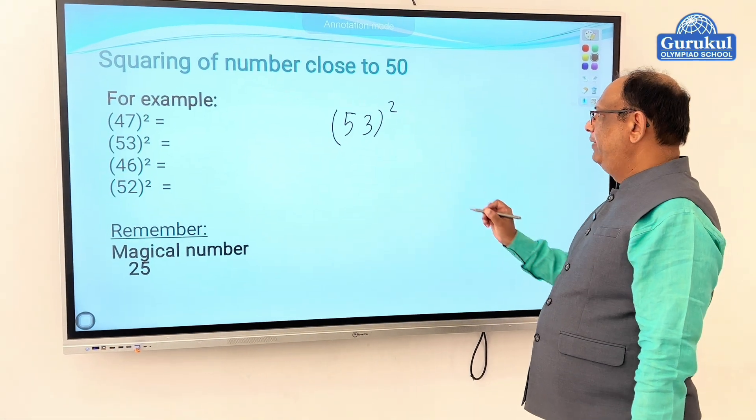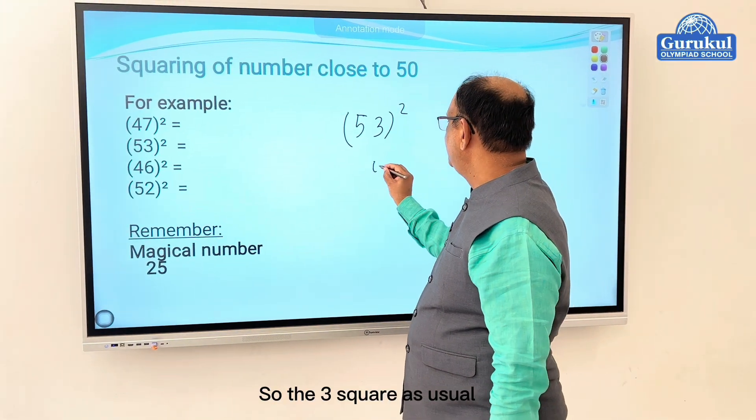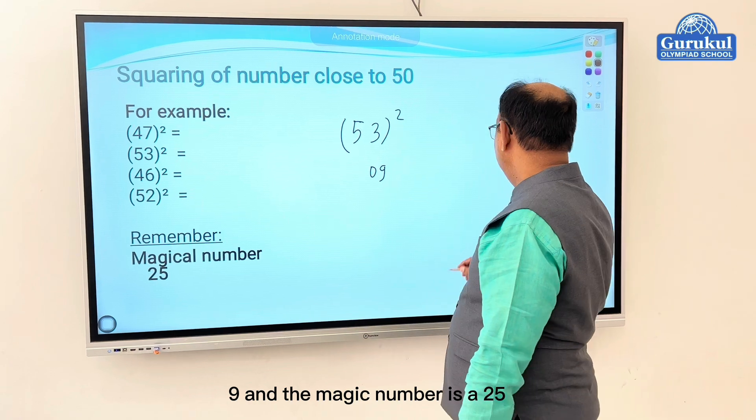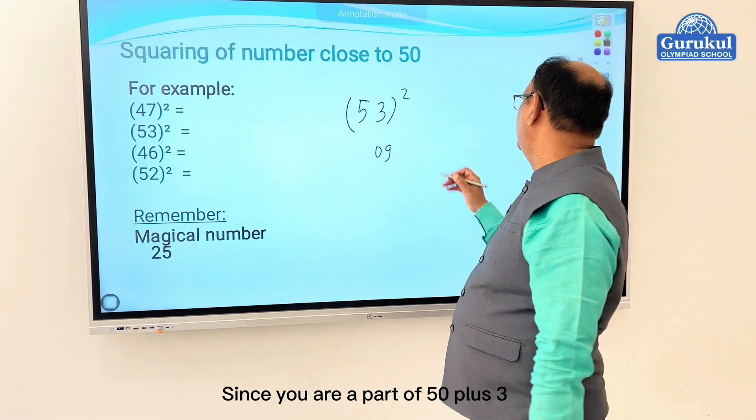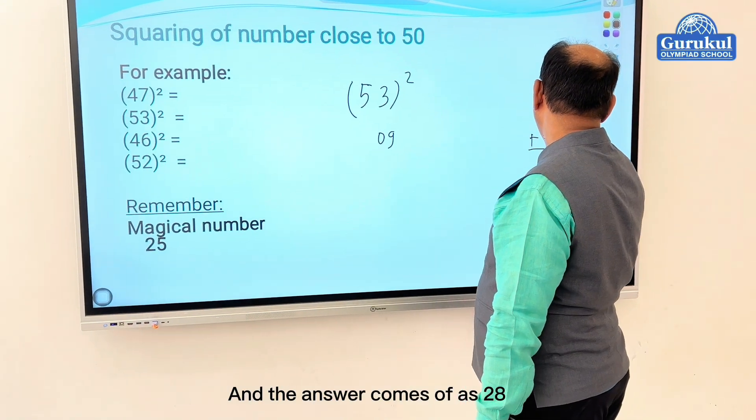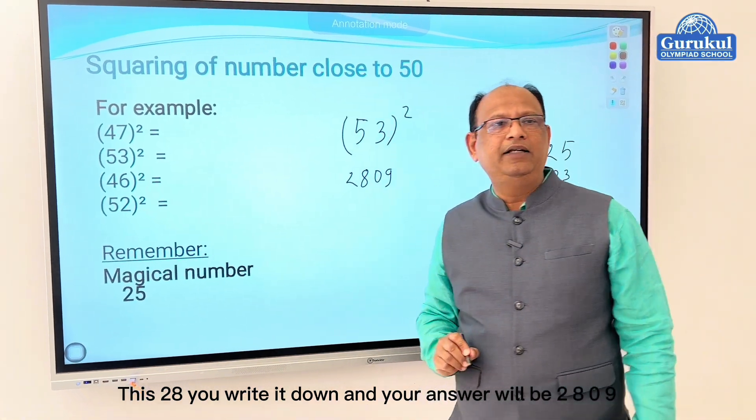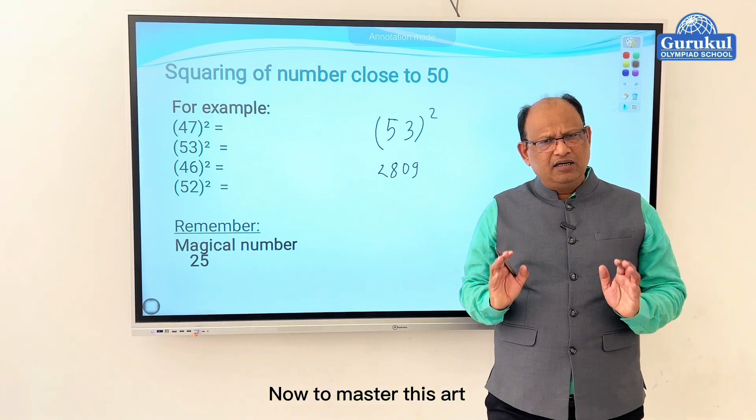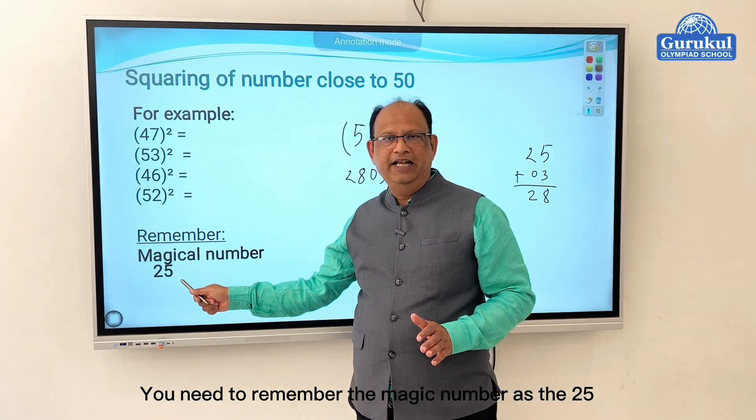Let's take a number as 53. 53, we know, is three above 50. So three squared, as usual write in two digits as 09. And the magic number is 25. Since you are above 50, you add three. The answer comes out as 28. Write this 28, and your answer will be 2809. Simple method. To master this art, you need to remember the magic number as 25.